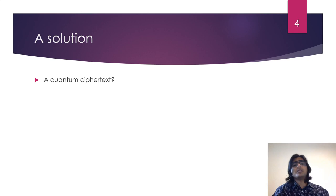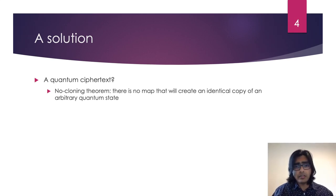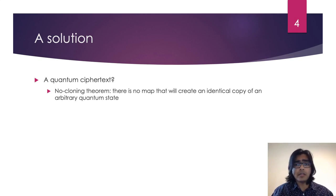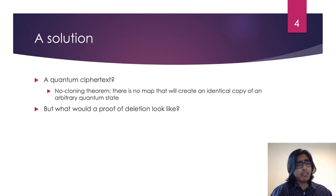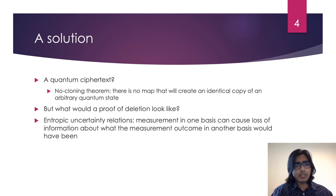At this point, we should consider using a quantum ciphertext. After all, thanks to the no-cloning theorem, we know that there is no map that will create an identical copy of an arbitrary quantum state. But even given this, one may wonder how will Bob prove to Alice that he has deleted the quantum ciphertext?